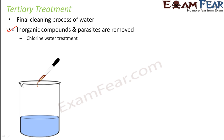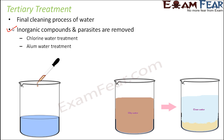Therefore, chlorine needs to be added only in very small quantities and managed very carefully. But yes, since chlorine is toxic, it is also capable of killing the disease-causing microorganisms. So chlorination is one way of tertiary treatment. Another way is alum water treatment.